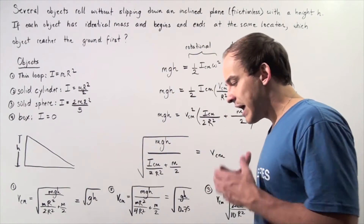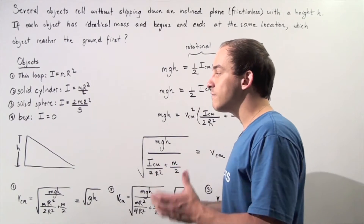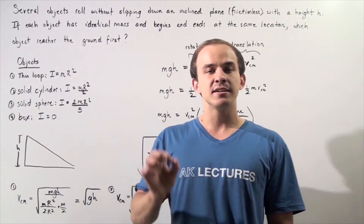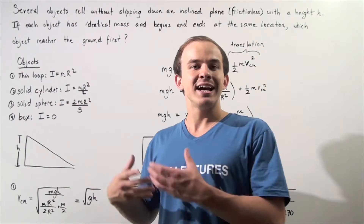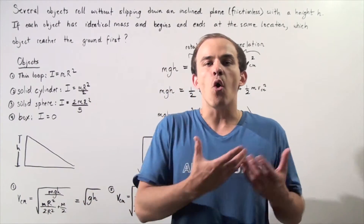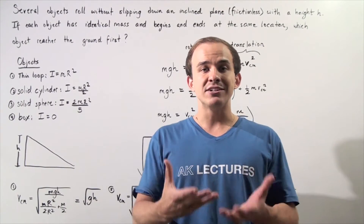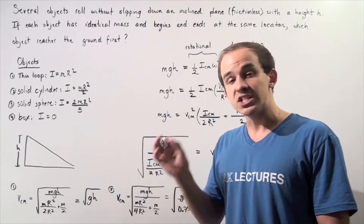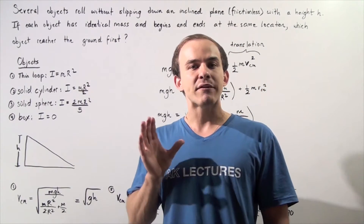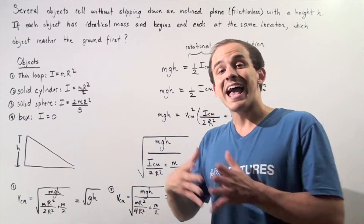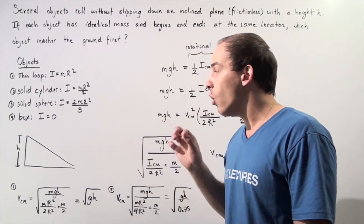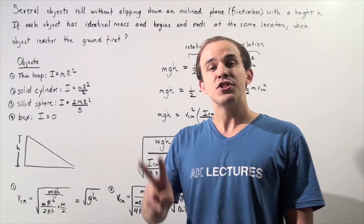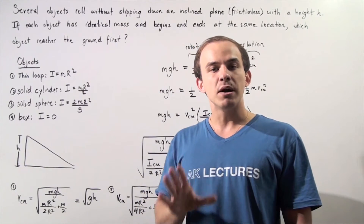Because we have no friction in our system, that means we have a conservation of mechanical energy. All the gravitational and kinetic energy at the beginning is equal to the sum of the gravitational potential energy at the end. Initially, our objects are not moving with any velocity, so we only have gravitational potential energy. At the end, when the objects reach the ground, all the gravitational potential energy has been transformed into kinetic energies. There are two types of kinetic energies that we must consider.